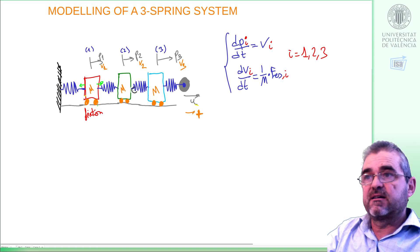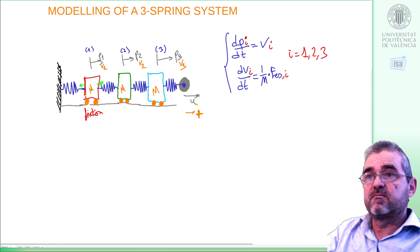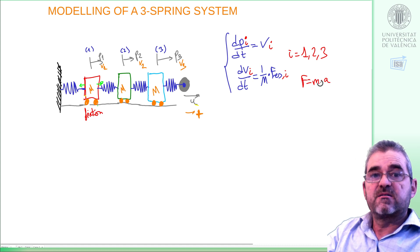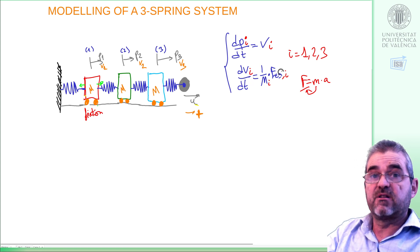As we are modeling mechanical systems, the basic equations will be Newton's law: that the time derivative of positions are speeds, and force equals mass times acceleration if we divide by mass. This ends up being that the derivative of the speed, which is acceleration, is the resulting force in object i, 1 to 3, divided by its mass.